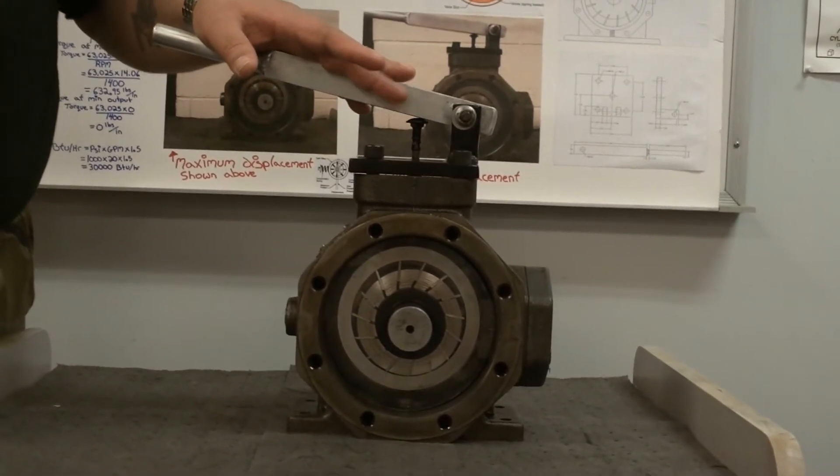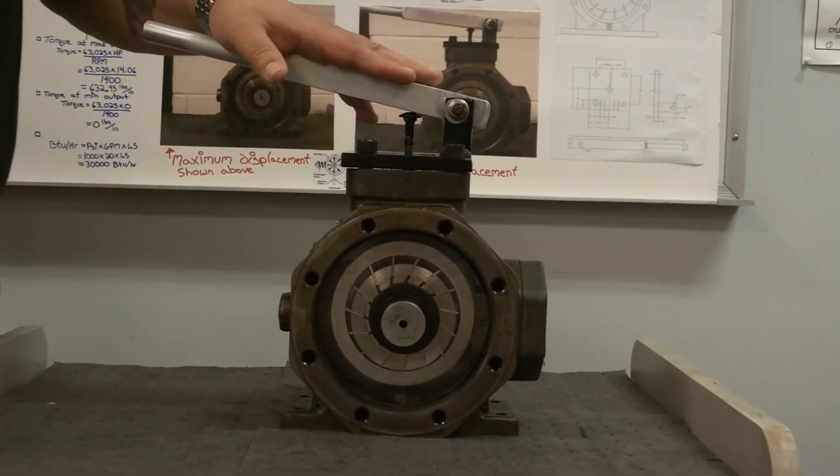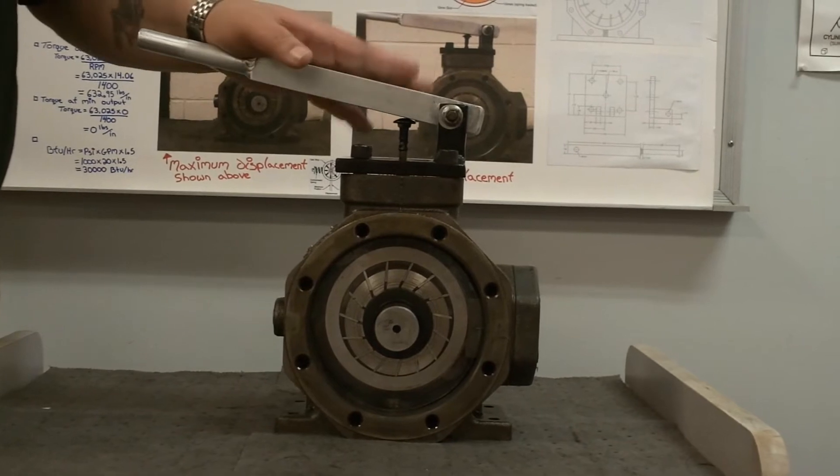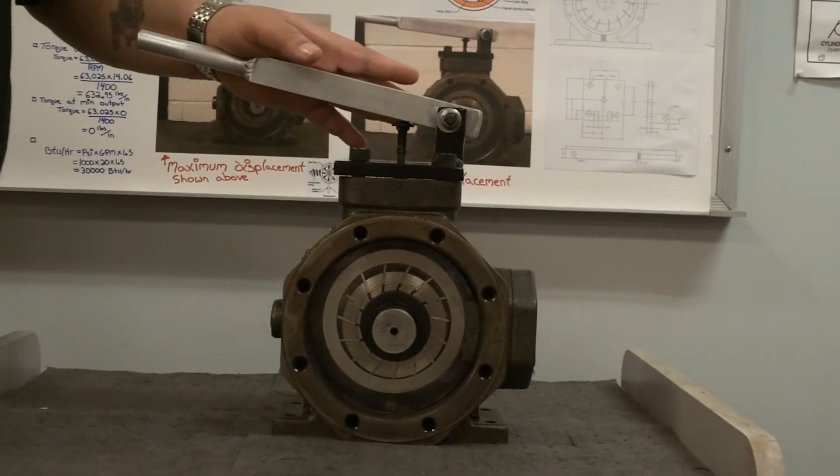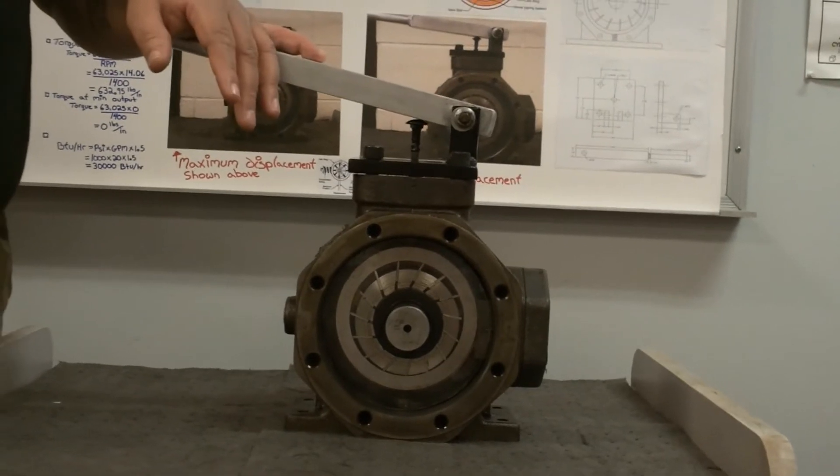Now, a variable displacement pump, especially a pressure compensated one, only uses what power it actually needs. So when it doesn't need a certain amount of flow, it simply throttles itself back, requiring less energy.